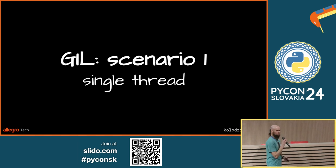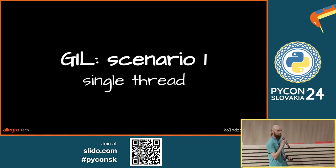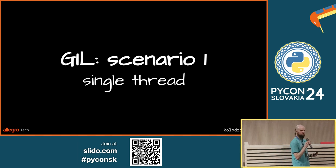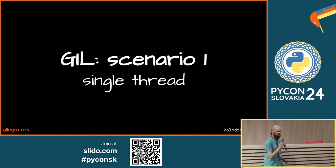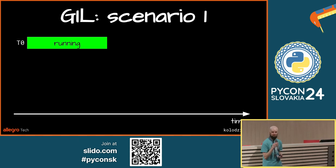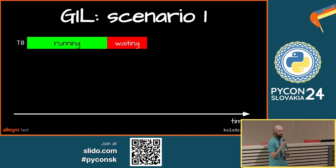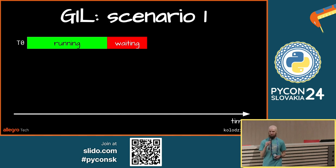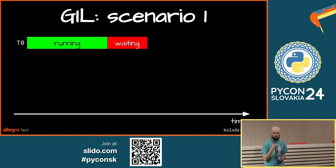This section briefly shows how the GIL operates. As a warm-up, a single thread example: a thread executes some instructions, at some point calls for IO and gets blocked, waiting for the system call to complete. Life is simple — we don't need to talk about the GIL here.